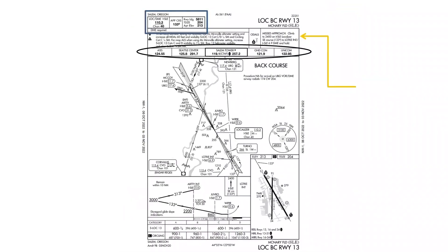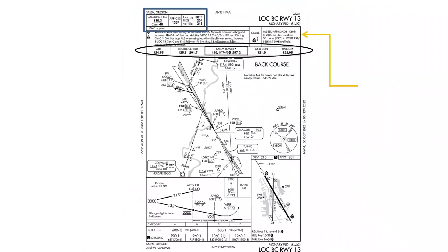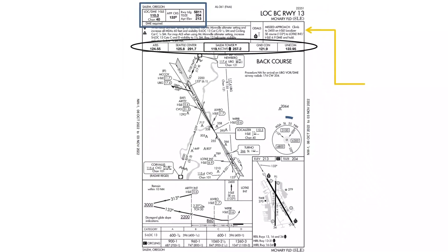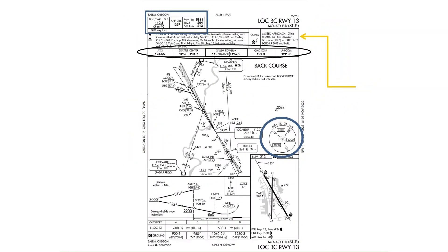MSA stands for Minimum Safe Altitude. Minimum safe altitudes provide for 1,000 feet of obstacle clearance within a 25 nautical mile radius of the navigation facility. The minimum safe altitude when approaching on a heading between 200 and 320 degrees is 6,300 feet above mean sea level, abbreviated MSL.